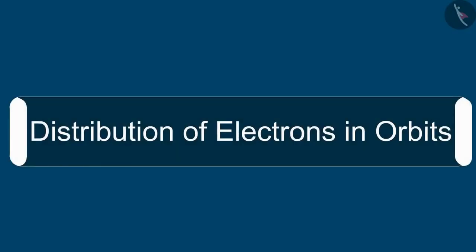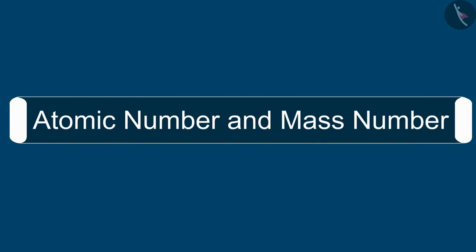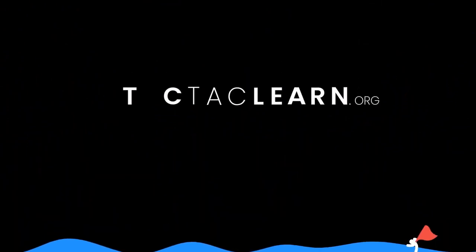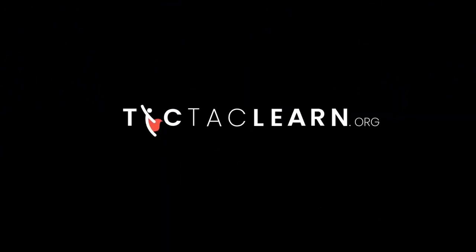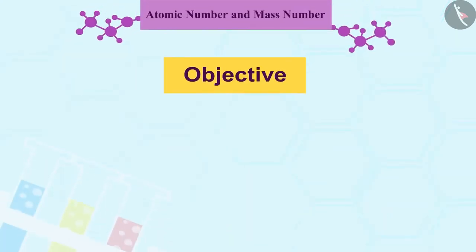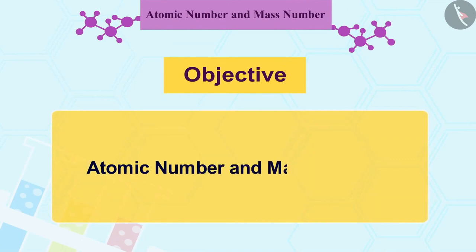In this video, we studied the distribution of electrons in orbits. In the next video, we will learn about atomic number and mass number. Welcome to this video session. The topic we are going to study in this session is atomic number and mass number.